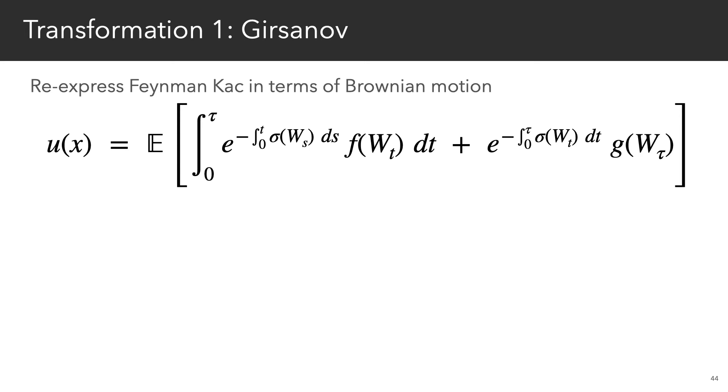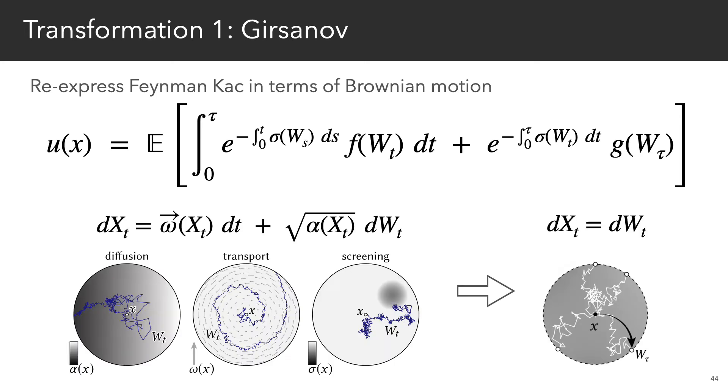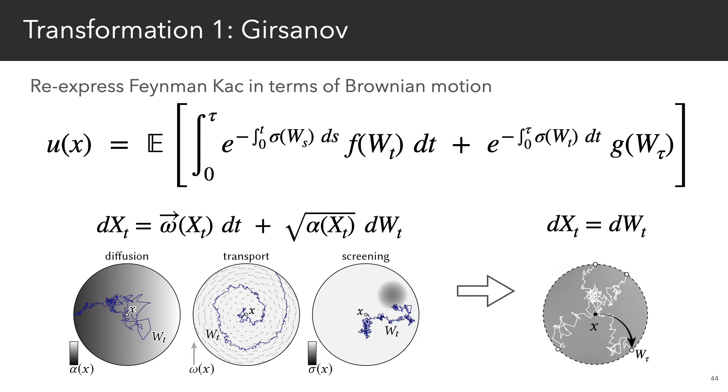On the stochastic front, our first transformation rewrites the Feynman-Katz formula purely in terms of Brownian motion instead of a diffusion process. As part of this transformation, all the original coefficients get converted into a single variable absorption coefficient sigma. Now, to get rid of this sigma,